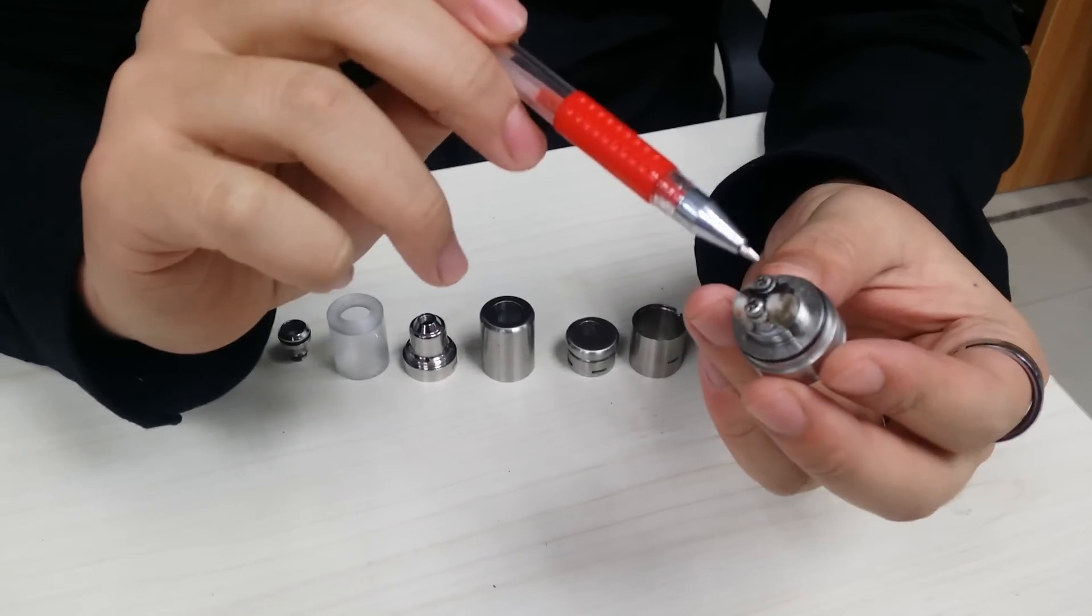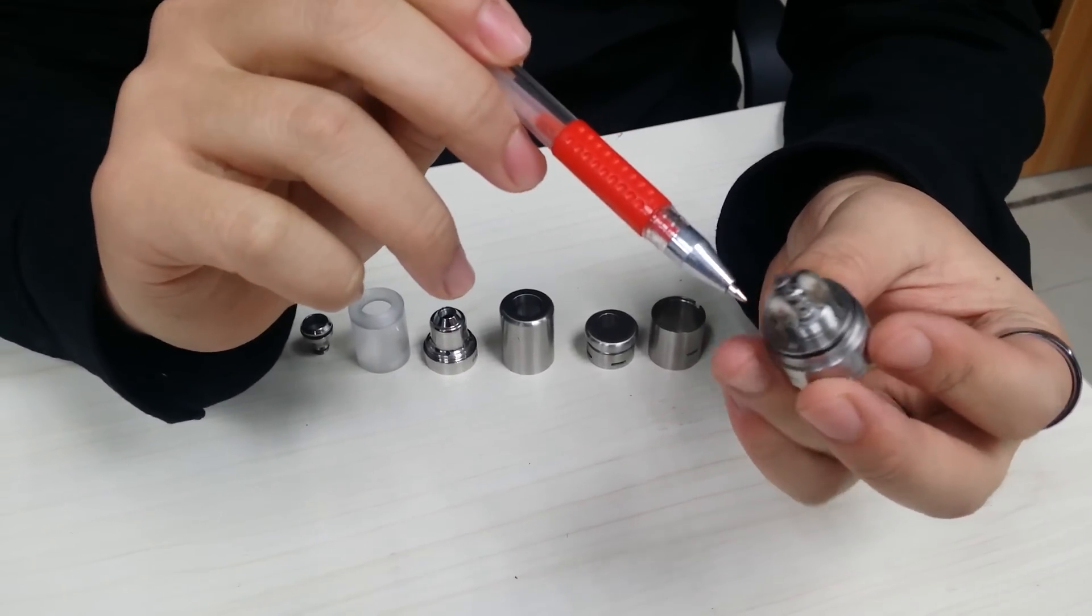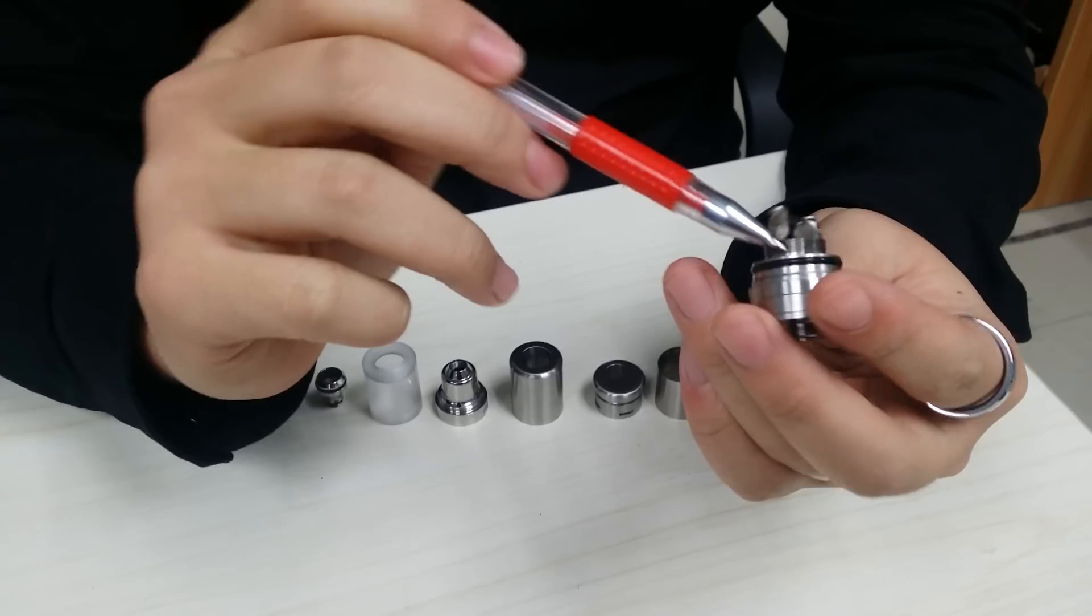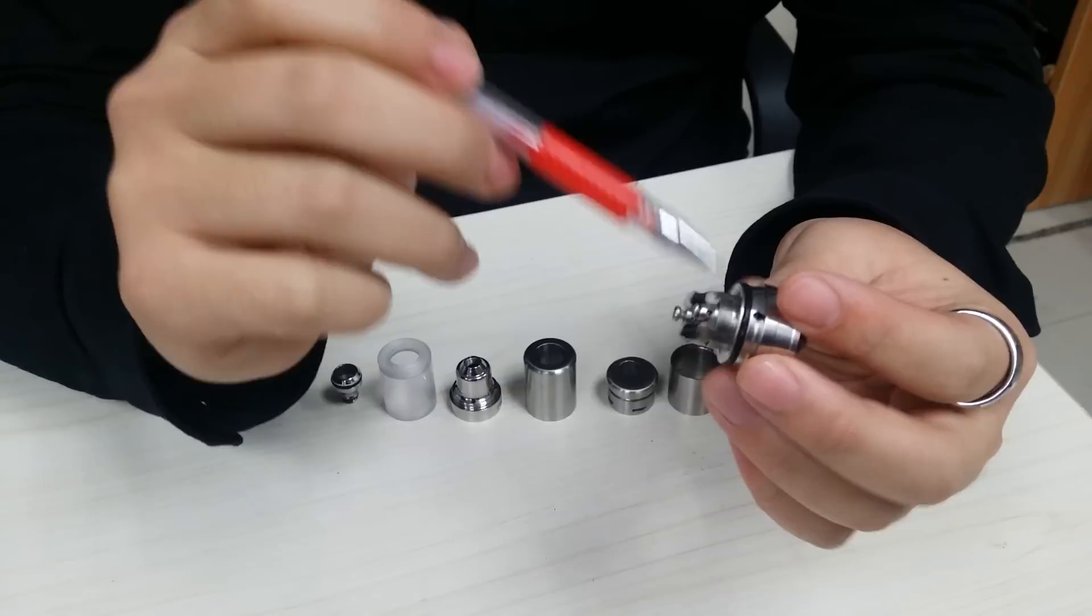This one, you can see it. It gets one positive pole and a negative pole. It can make a dual coil because it has four lines for liquid in. One, two, three, four.